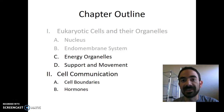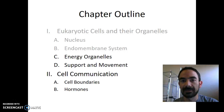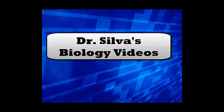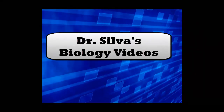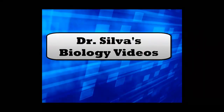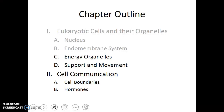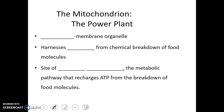Next up on our tour are the energy organelles, the mitochondria and the chloroplasts. For a cell to make all of its proteins and to perform its other functions, it needs energy. So let's look at the energy organelles.